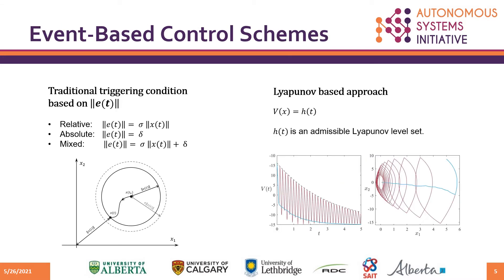Up to now there are two main approaches to design triggering conditions. The first method is based on defining a threshold on the admissible norm of the measurement error. The threshold can be a function of the state, a constant, or a mix of them. The main drawback of this scheme is that triggering takes place whenever the error exceeds the admissible threshold, no matter whether the trajectories are converging to the origin or not.